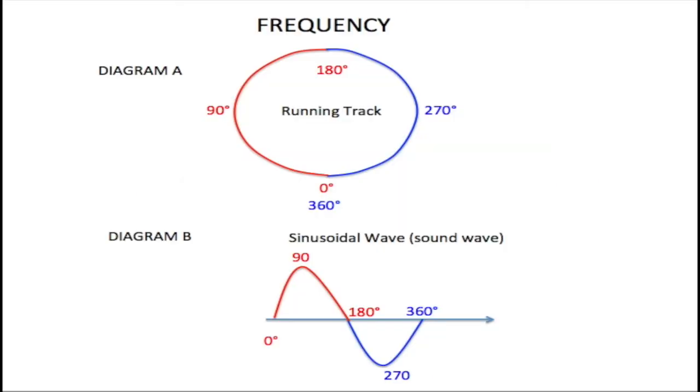Of course in the real world, frequency is not generated by a runner running around a track, but by sound. Electronic generators are used to produce sound waves using the same 360 degree cycle as used in our example with a runner running around a circular track. And these cycles are generated and measured over one second as well. The number of cycles transmitted over a second is referred to as your frequency.